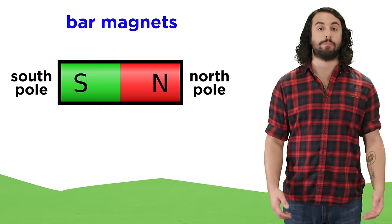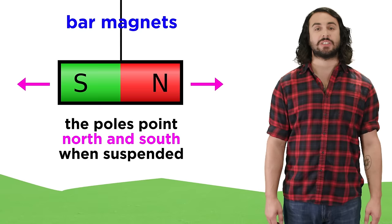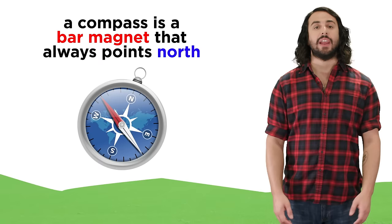Any bar magnet will have ends called poles, one will be the north pole and one will be the south pole, which were named as such because of the way a suspended bar magnet will orient with respect to the cardinal directions.